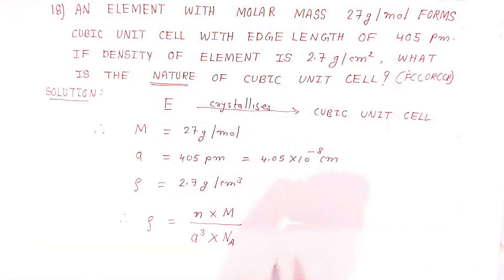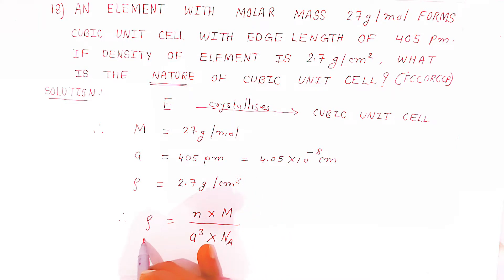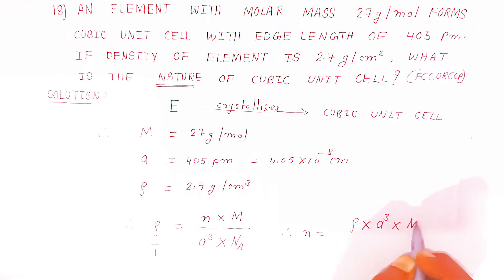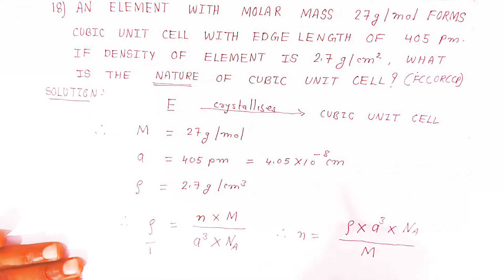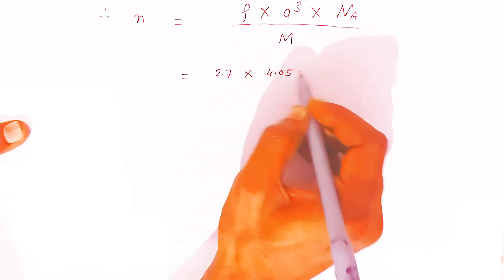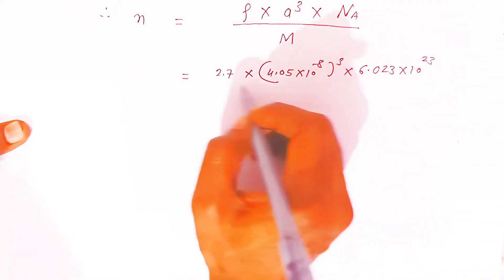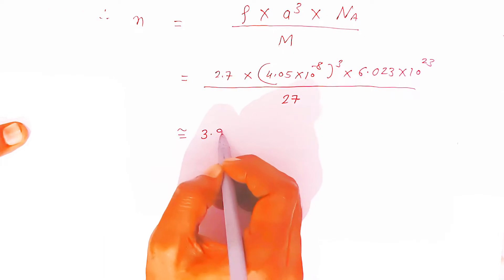Rearranging the formula, n equals rho into a cube into Avogadro number, divided by molar mass. Putting in the values: density = 2.7, side = 4.05 × 10⁻⁸ cm (cubed), Avogadro number = 6.023 × 10²³, divided by molar mass = 27. Using the log table, the value comes out to nearly 3.997, which is approximately equal to 4.